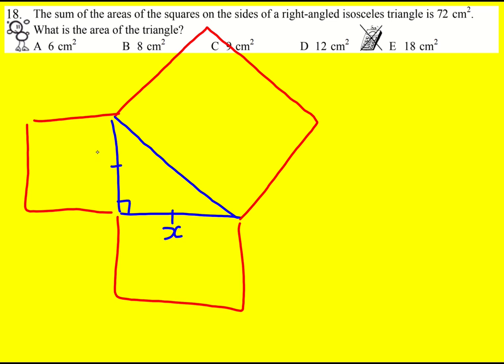Now they're isosceles triangles, so this is x, this is x, and I'll call this y.